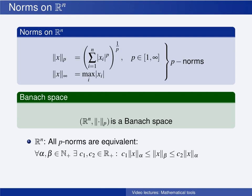That means that for any two values of p, call these alpha and beta, there will exist two positive real constants c1 and c2, such that this inequality is satisfied: the beta norm is lower and upper bounded by the alpha norm. For instance, take the 2-norm and the infinity norm — there exist two constants c1 and c2 such that the infinity norm is lower bounded by c1 times the 2-norm of x and upper bounded by c2 times the 2-norm of x. This means that if we can show a property holds for one norm, it will also hold for the other. We can choose whichever norm is easiest and then use this equivalence to show it holds for the other p-norm.